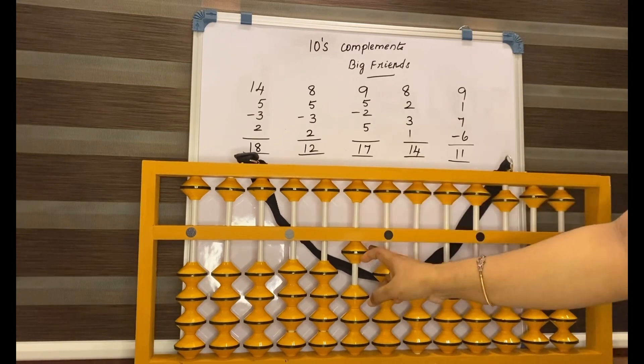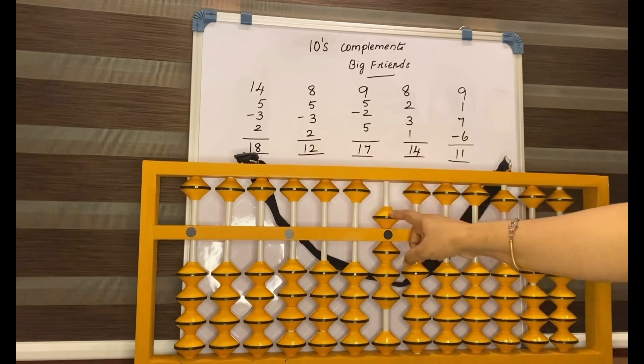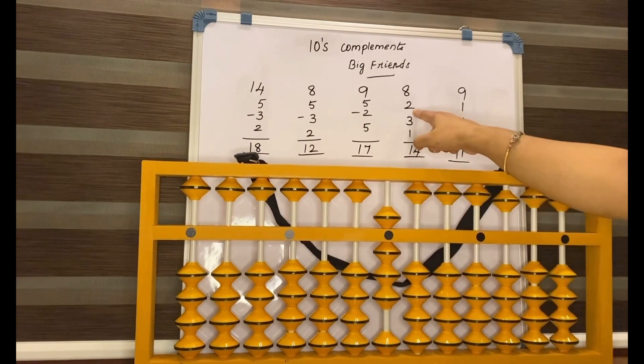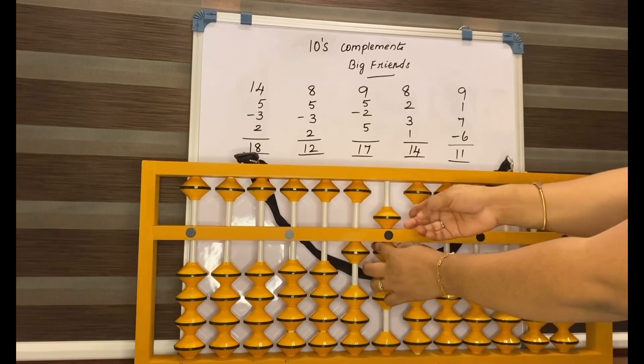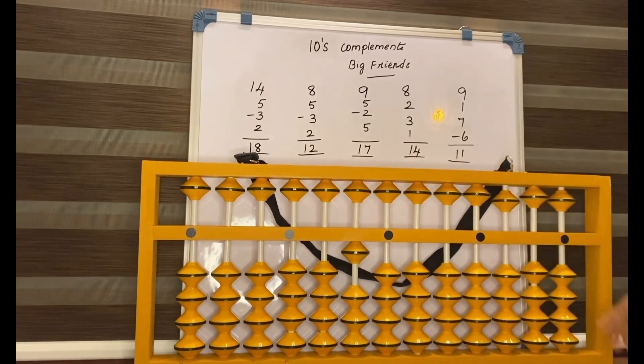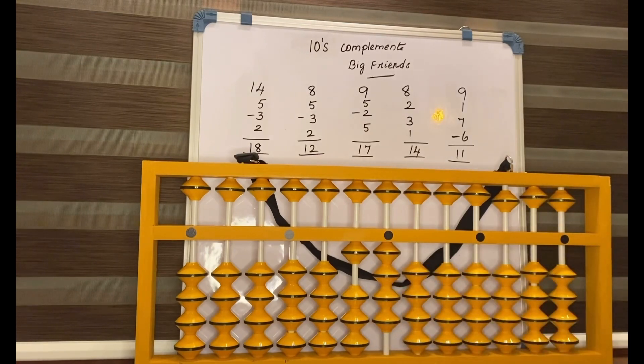Now again set 0, 8, 2. How to add 2 here? Add 10, less 8, 3, 1. Answer is 14.